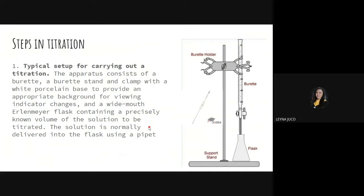Now here are the steps for titration. Listen carefully — this can be very confusing, especially without an actual demonstration. Step one: the typical setup. The apparatus consists of a burette — it contains graduations or measurements like a ruler — so we know how much fluid is inside, which is our basis for determining sample concentration.